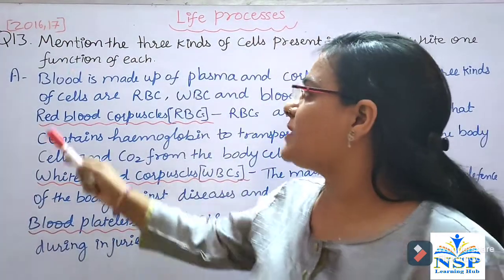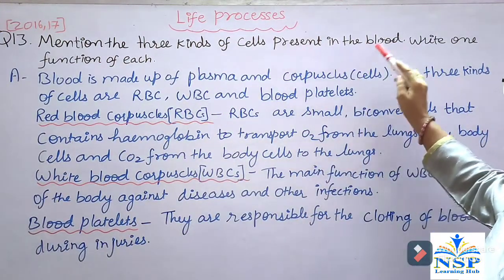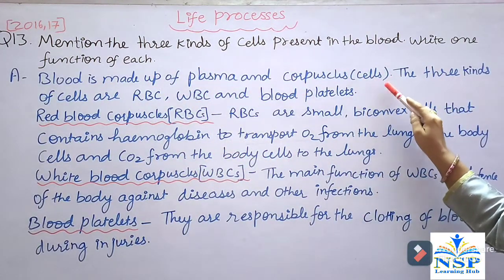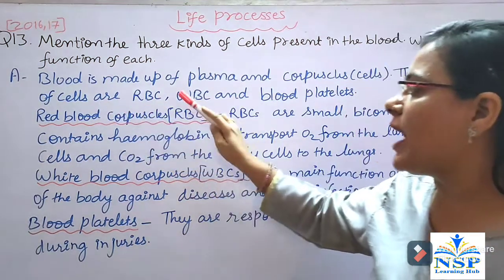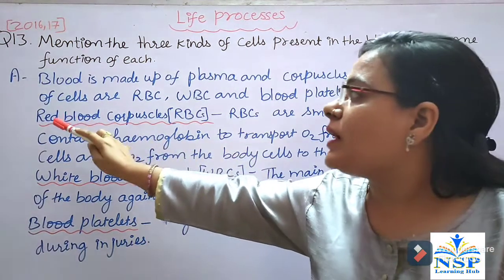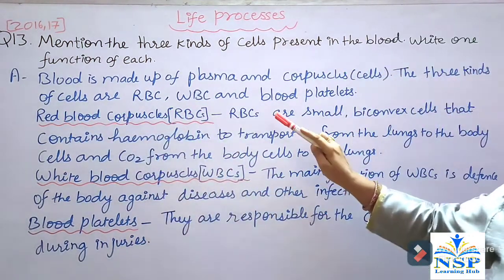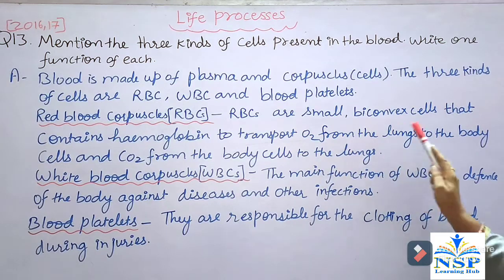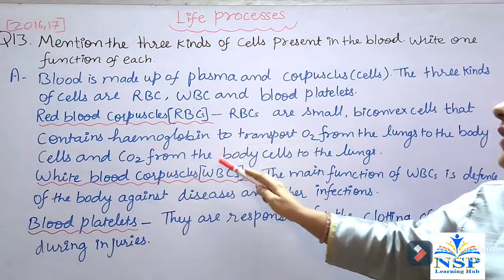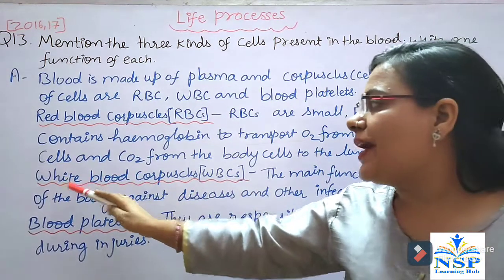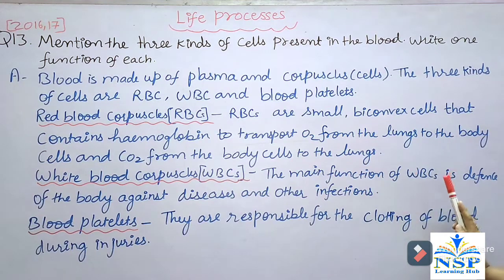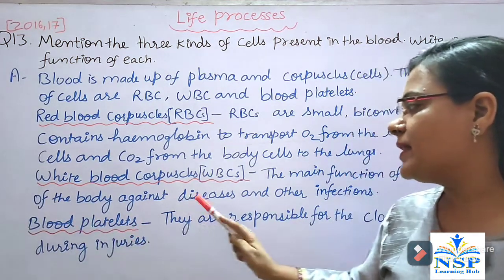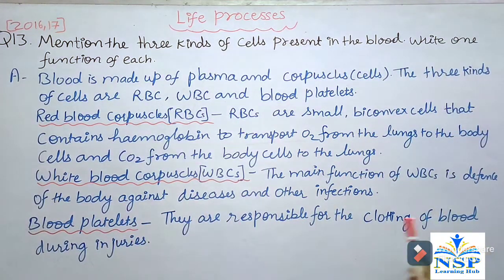Next question: Mention the three kinds of cells present in blood. Blood is made up of plasma and corpuscles or cells. The three kinds of cells are RBC, WBC, and blood platelets. RBC — red blood corpuscles — are small, biconcave cells that contain hemoglobin to transport oxygen from the lungs to the body cells and carbon dioxide from the body cells to the lungs. WBC — white blood corpuscles — have the main function of defense of the body against diseases and infections. Blood platelets are responsible for the clotting of blood during injuries.